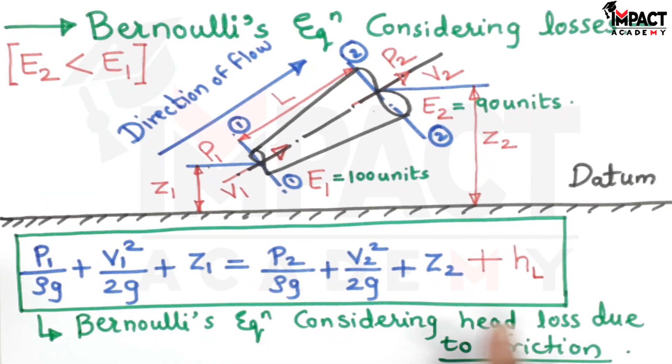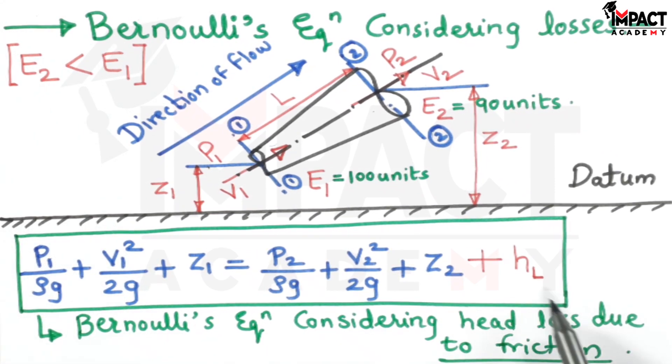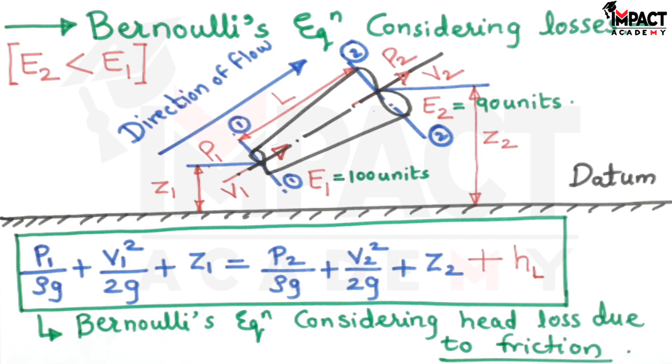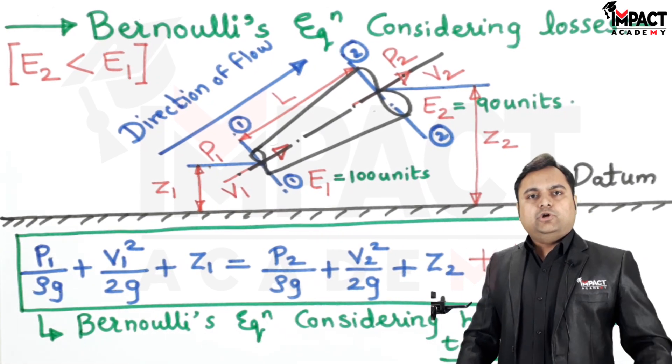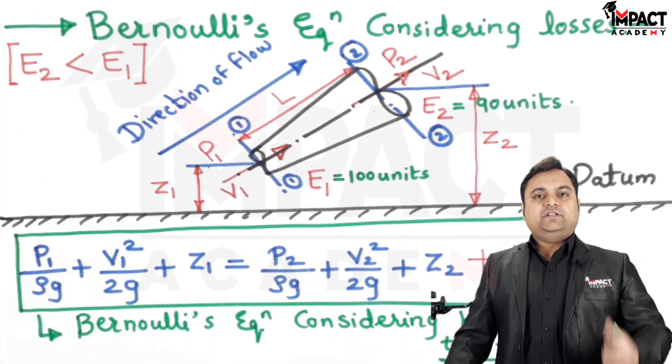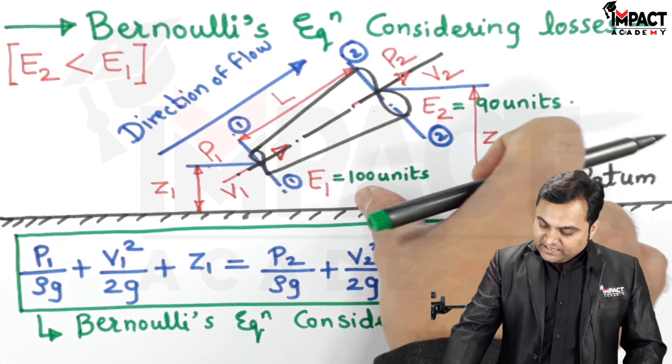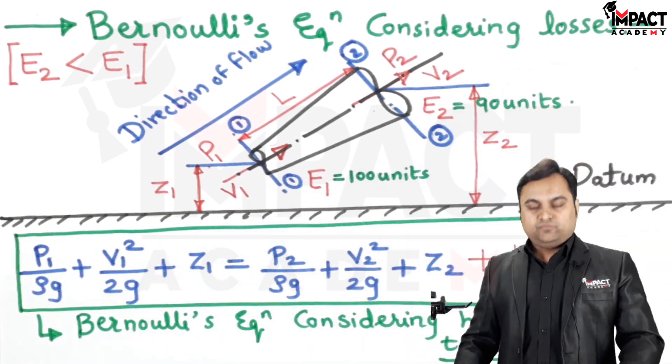So this is the Bernoulli's equation considering HL, which is the head loss due to friction. And why friction? Because out of all the losses, the head loss due to friction is the major loss. So E1 minus E2, the difference what we have, is called as HL, the head loss due to friction.